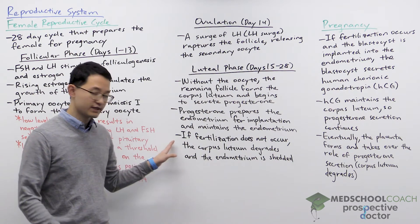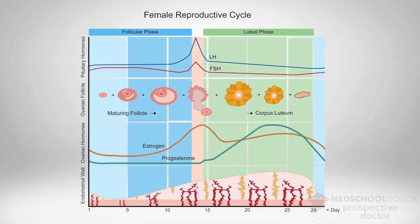As you can see on this diagram, if fertilization does not occur, the corpus luteum will gradually degrade. When it degrades, progesterone secretion stops and the endometrium will be shed. At the end of the luteal phase the progesterone levels drop off, the endometrium starts the shedding process, and that overlaps into the start of the follicular phase where the shedding process is finishing.